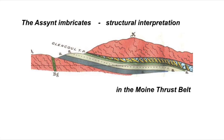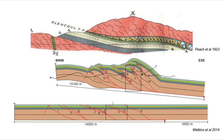This cross section was drawn in the latter part of the 19th century. Structural complexity is still a feature of modern cross sections through the thrust belt — here's a section drawn some hundred years later — and the commonality between these two sections is the idea that thrusts can stack stratigraphy again and again and again.